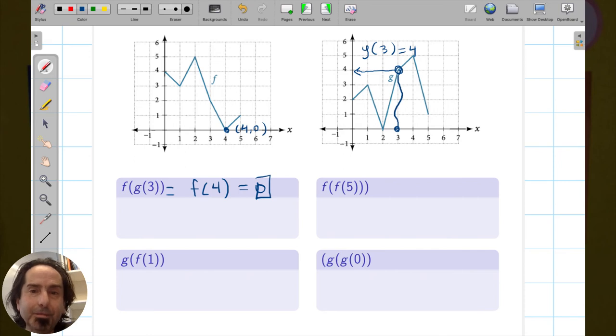How about f(f(5))? Well, f(5), here's the input. And so there is the point 5. And the output is the second coordinate. You can see that that is the number on the y-axis. That's 1. So this is f(1). I'm going from the inside out. And then now the input is 1. Here's the point on the curve. The output is 3. So the output is 3 for that second problem.